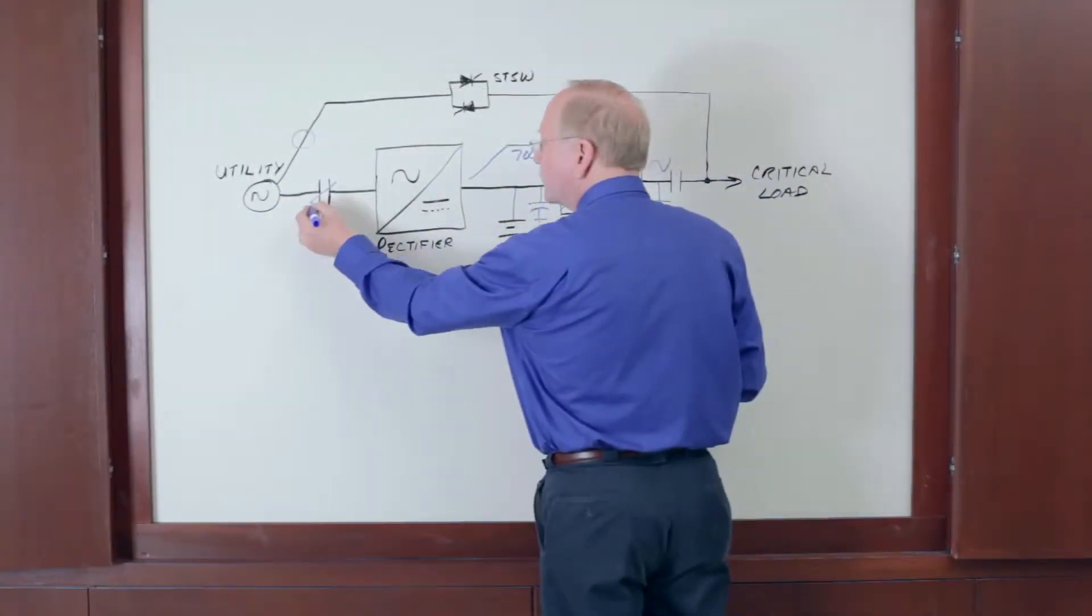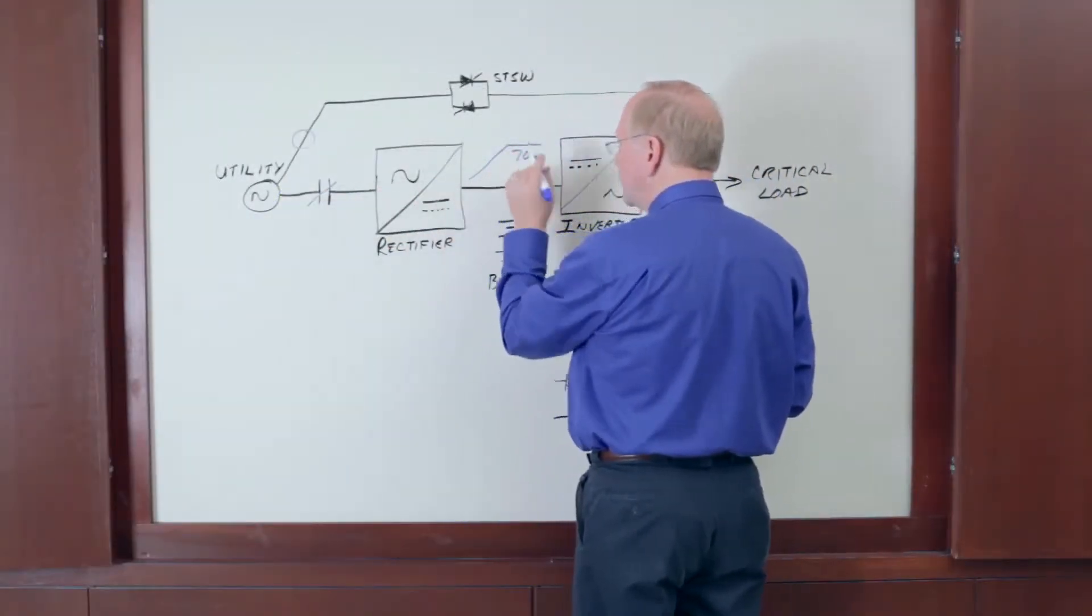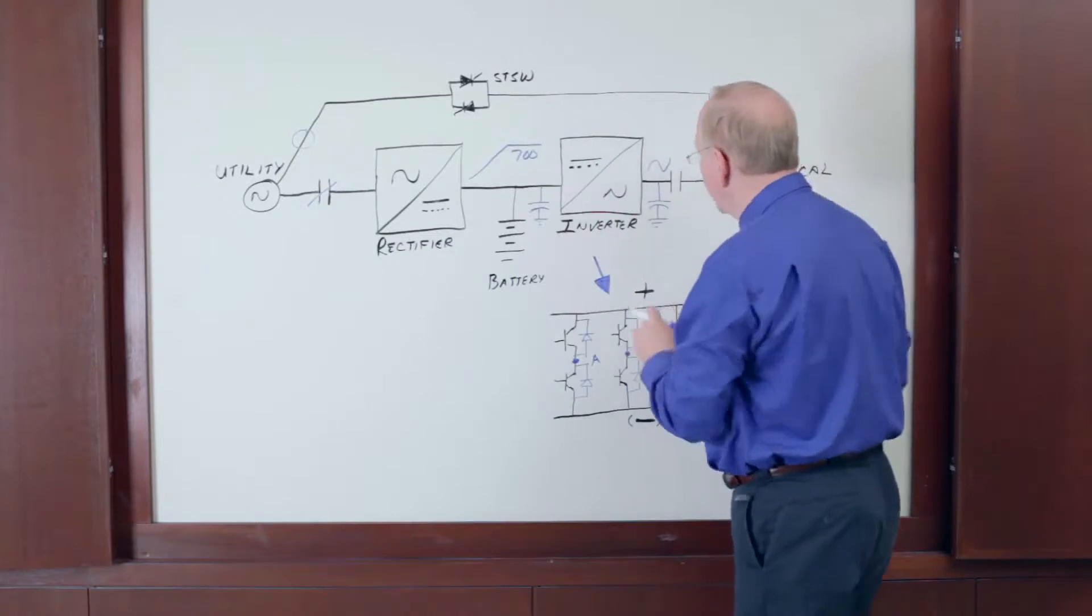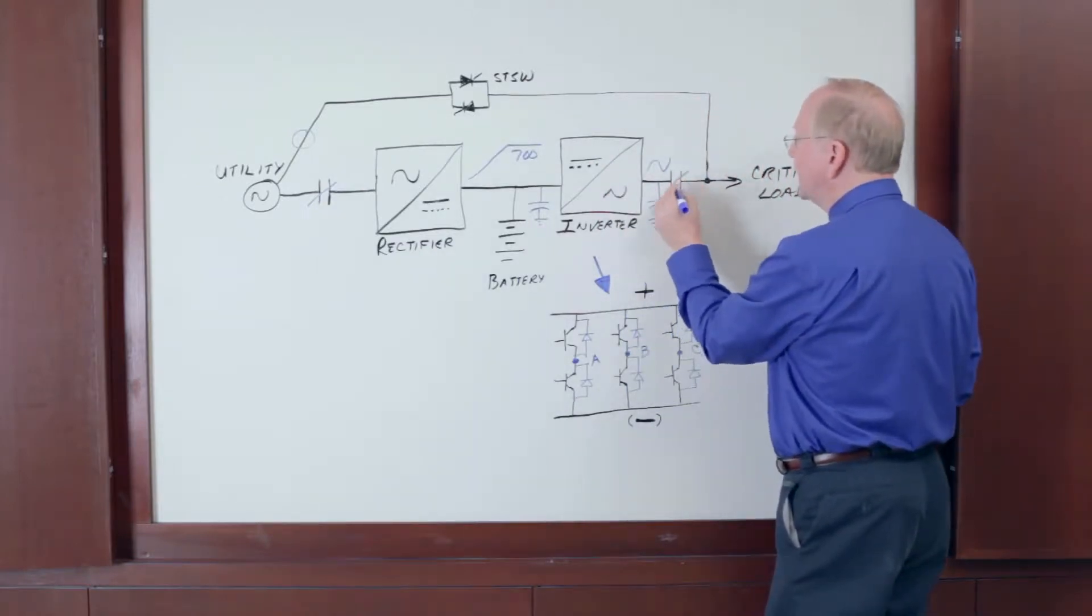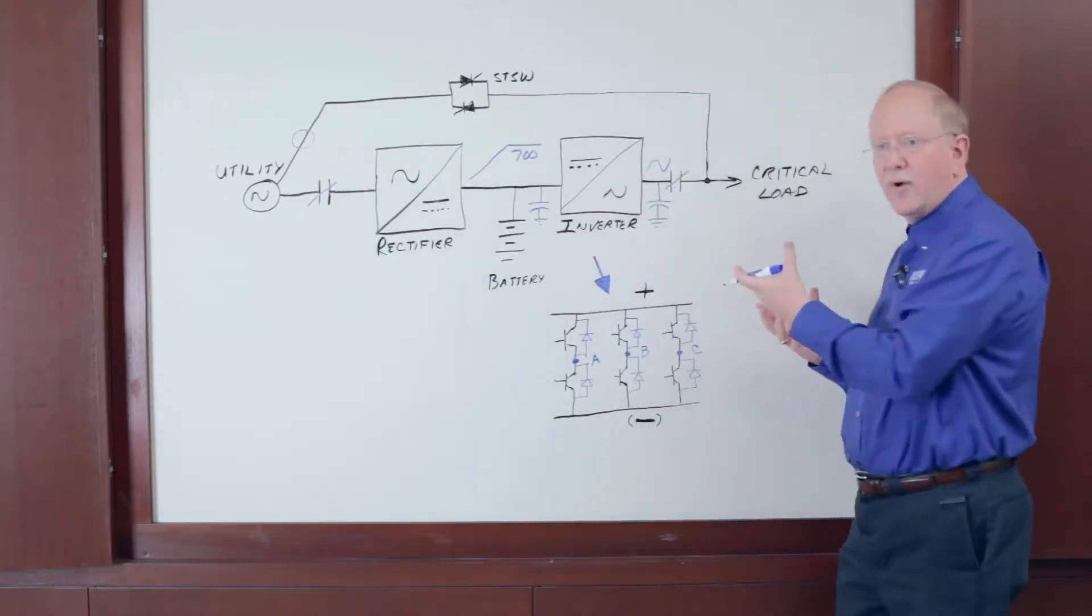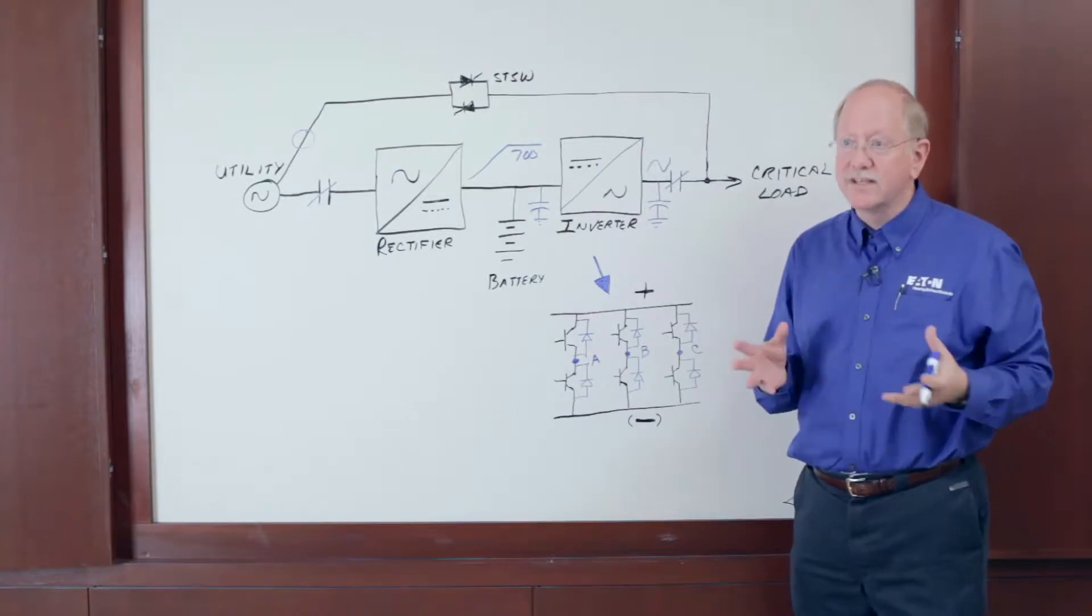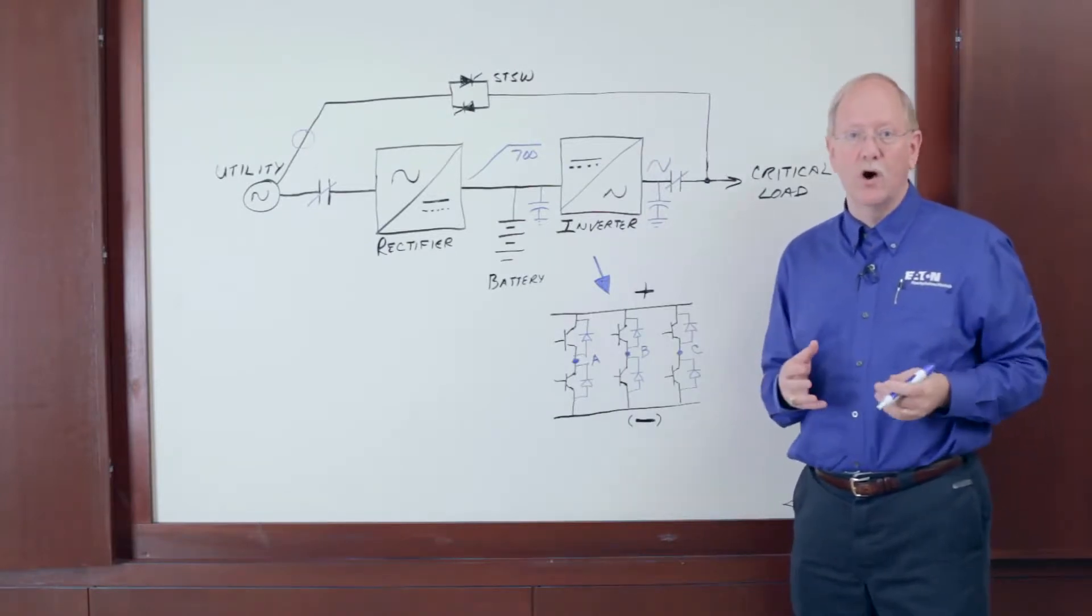So close the input contactor, ramp the rectifier for 30 seconds, turn on the inverter, synchronize the inverter, finally close the output contactor, and you have an output from the UPS. The process takes two to three minutes. It's much too long.